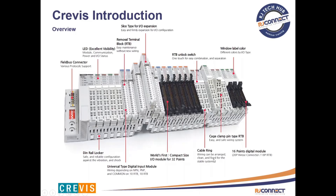Each card comes with a cable ring for easy cable management. They are also the world's first compact size I.O. module with up to 32 points of digital inputs or outputs. This modular type of I.O. makes it easy to expand your I.O. and also provides a firm solution for installations with high vibration and shock. Each module also has a DIN rail locker to secure it in place. All the cards have visual LEDs showing that the module's communication, power, and I.O. status is healthy.